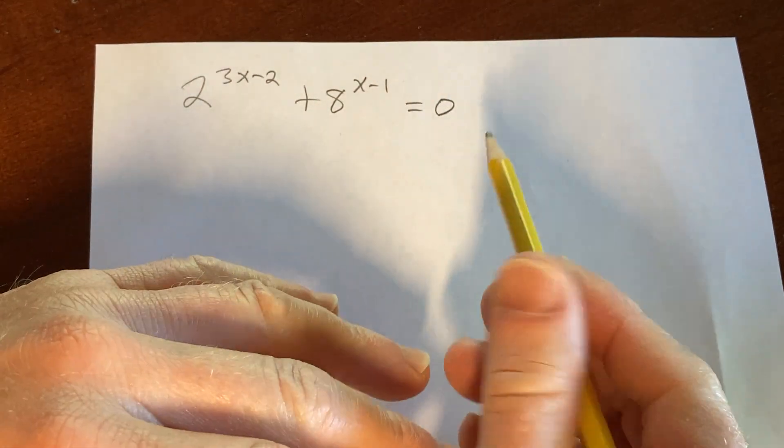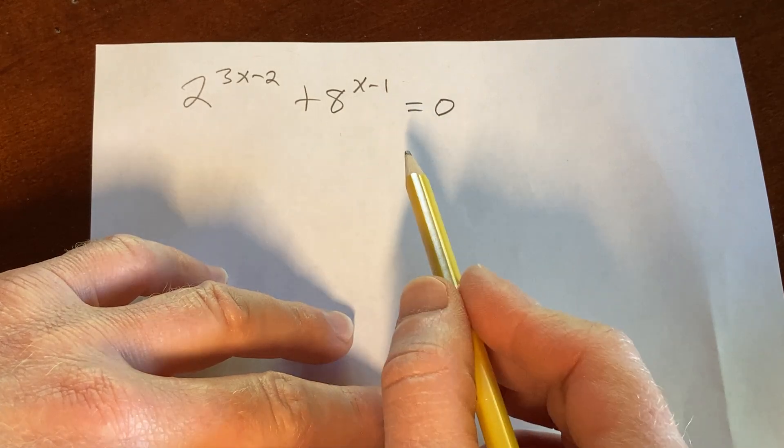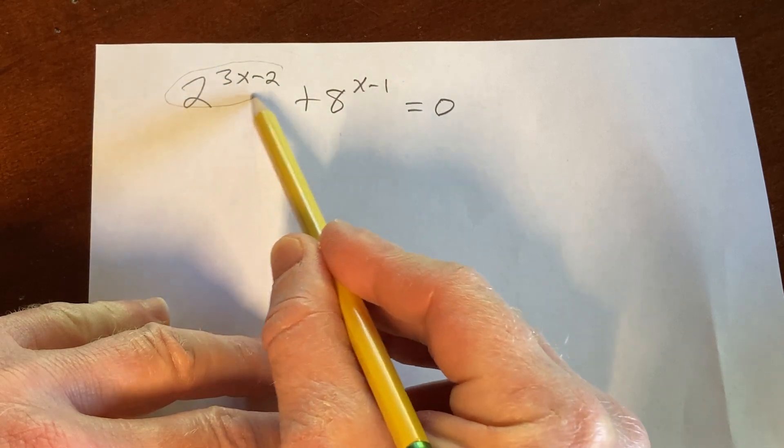So whenever you have an equation, sometimes, maybe all the time, it's a good idea to think about what's going on. And if you think about this right away, you can see that this is a positive number.